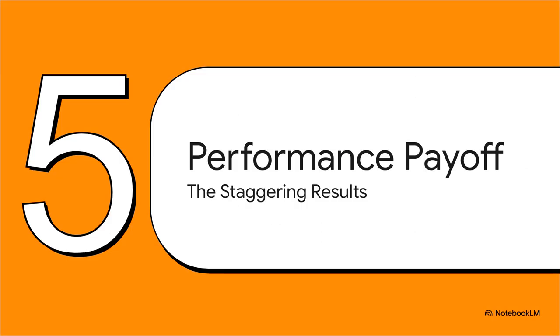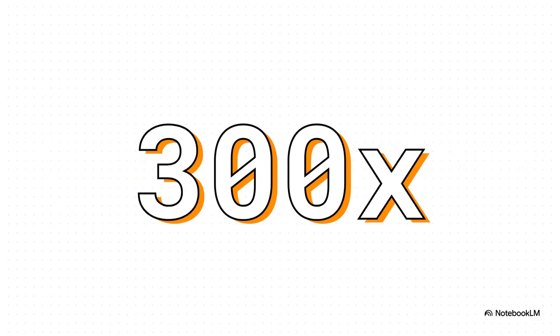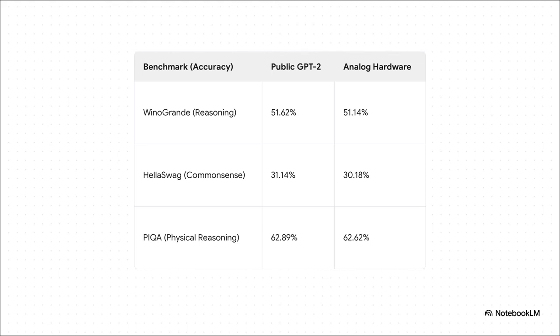So now that the hardware and the software are best friends, let's get to the final payoff. What does all this work actually get you? This is where it gets really, really good. First, the headline number: energy savings. Compared to a top-tier NVIDIA GPU, this new analog chip is up to 90,000 times more energy efficient. I'm going to say that again, 90,000x. It's an absolutely astronomical number. And it's not just about efficiency. It's also blazing fast. The latency, the delay before you get an answer, is slashed by up to 300 times compared to that same high-end GPU. But this, this right here, is the most important part. You'd think that getting these insane gains in speed and efficiency would mean the AI has to get dumber, right? Some kind of trade-off? Well, look at the data. On standard AI reasoning tests, the performance of the new system is virtually identical to the original GPT-2. It's all the gain, with almost no pain.